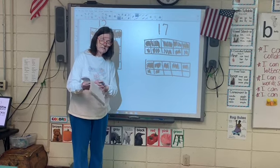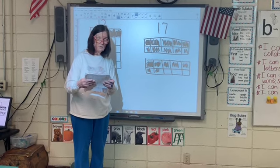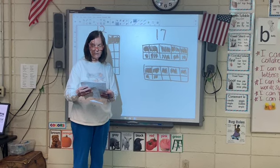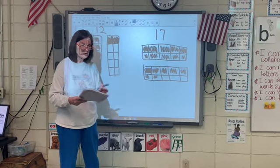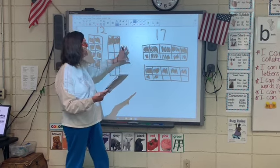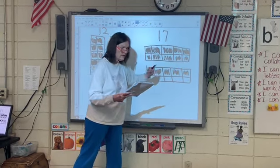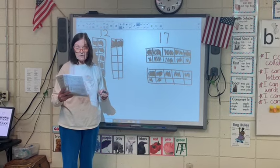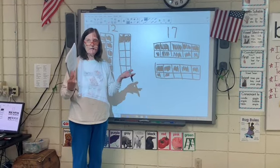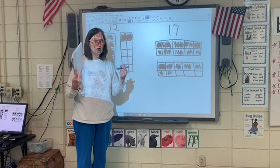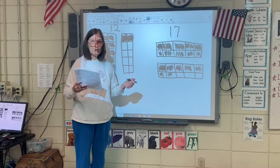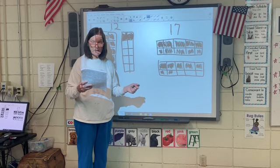And on the back it says: draw and circle 10 ones and some more ones to show each number. So what you do is look at the number first and then do the 10 frames — you just create a 10 frame. And down on the bottom it says choose a teen number to draw: 13, 14, 15, 16, 17, 18 — you can choose that number and draw on the bottom.